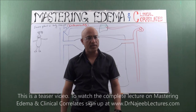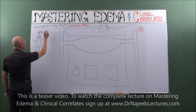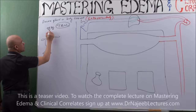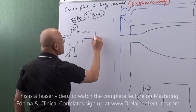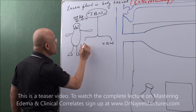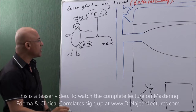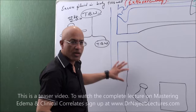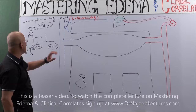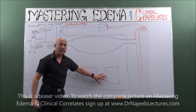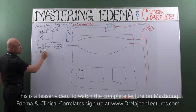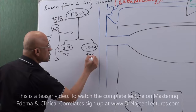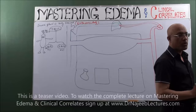Total body weight is divided into total body water and lean body mass. Lean body mass is about 40 percent and total body water is about 60 percent. This is very important: whatever our weight, approximately 60 percent of it is water.